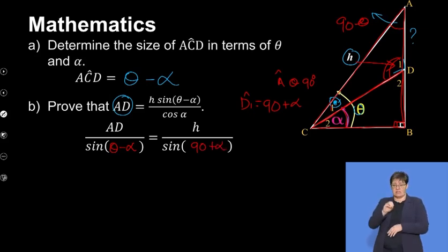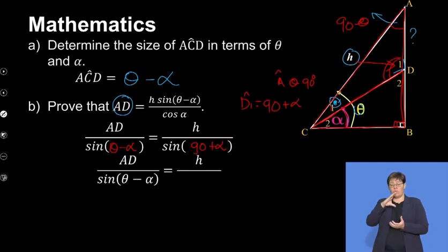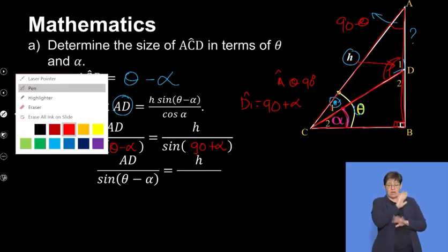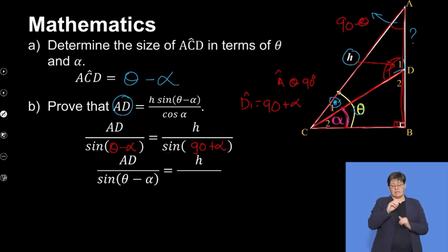The 90 plus alpha should already start reminding you of something, because there's a 90 here. We're probably going to end up using the co-ratio rule. Remember, sine of 90 minus theta, we're going to change it to its co-ratio. The co-ratio should become the co-ratio of its complement, so cosine of alpha.